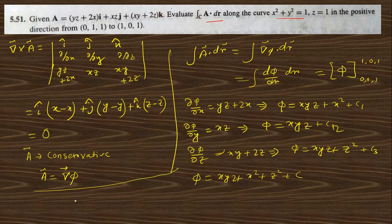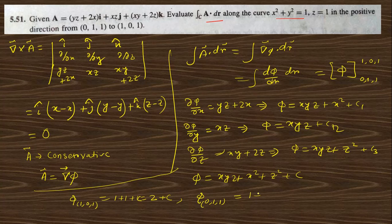Evaluating phi at the upper limit (1, 0, 1): putting x=1, y=0, z=1 gives 0 + 1 + 1 = 2 + c. Evaluating phi at the lower limit (0, 1, 1): putting x=0, y=1, z=1 gives 0 + 0 + 1 = 1 + c. So the difference, phi(1,0,1) minus phi(0,1,1), is (2 + c) minus (1 + c) = 1. So the value of the line integral is 1.